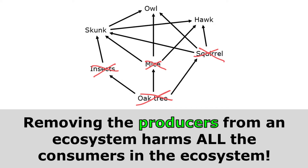Because all of the insects, mice, and squirrels are gone, that means there's no longer any food for skunks, owls, and hawks. So you can see that by taking away the producers, I've caused a domino effect that causes all of the consumers to either have to leave to find food elsewhere, or die.